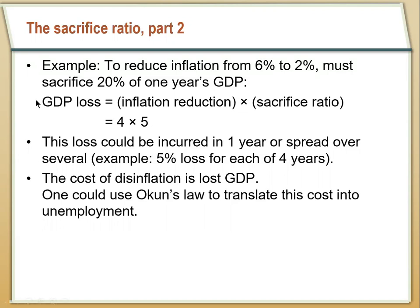The cost of disinflation — the cost of bringing inflation back down — is lost GDP. And we could translate that back to unemployment and the Phillips curve by using Okun's law.